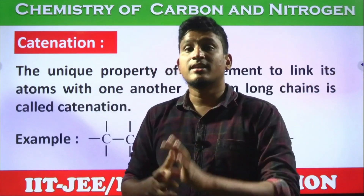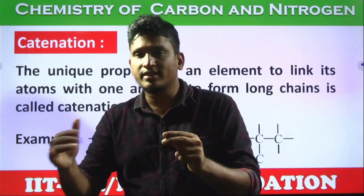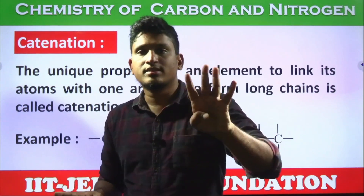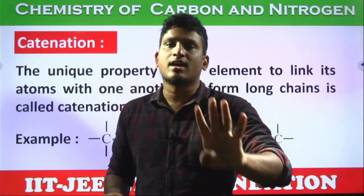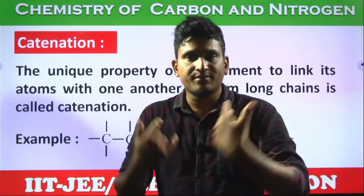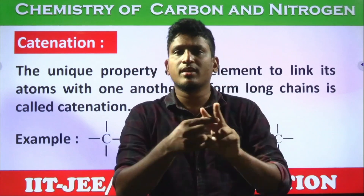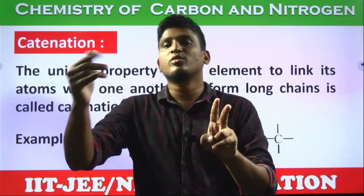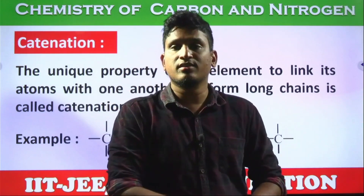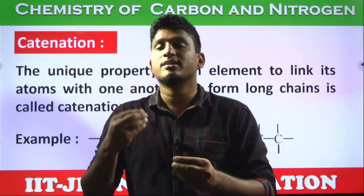Carbon's configuration is 2s1 2p3. Are there any empty orbitals in the second shell? No — absolutely none. All four orbitals are half-filled and can all form bonds with carbon or other elements. That is why carbon can form an unlimited number of compounds. If two carbons combine, that's one compound; if three combine, that's another compound; if four combine, that's yet another.